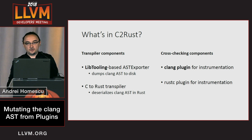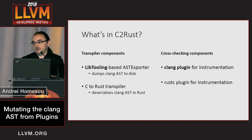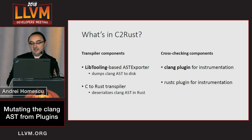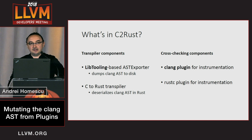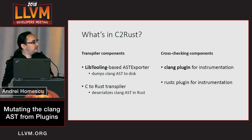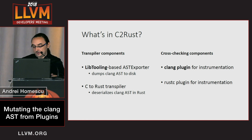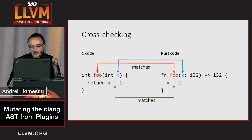The components that are interesting here are, first of all, the Clang-based C parser, which uses the Clang AST — we dump it to disk and then convert it to Rust code. And then the actual topic of this talk is the Clang plugin, which we use to insert instrumentation.